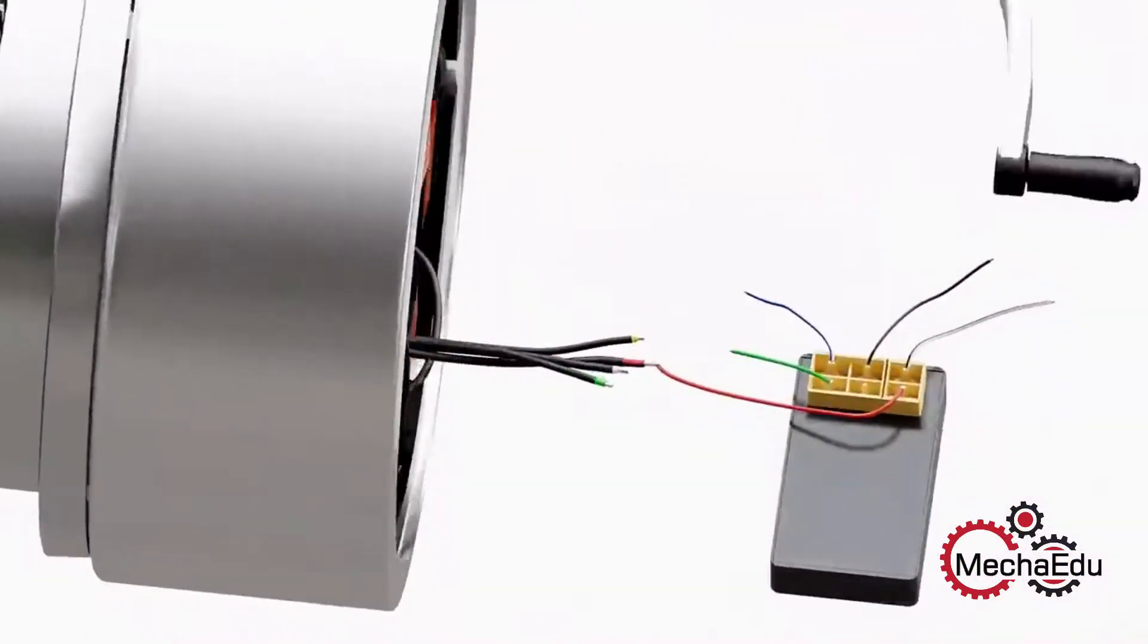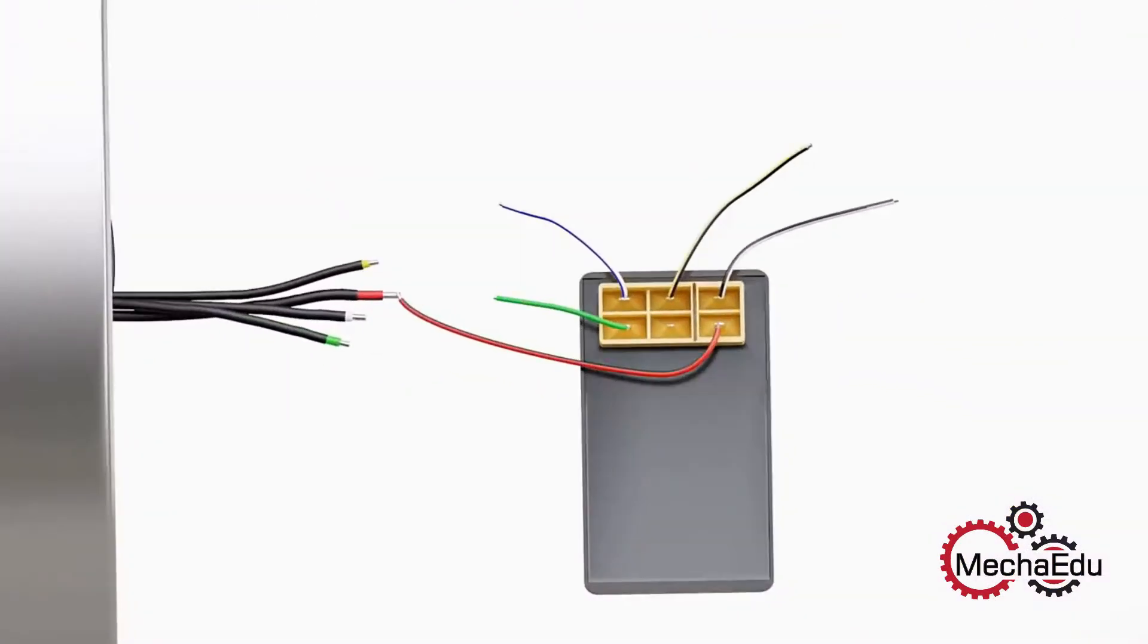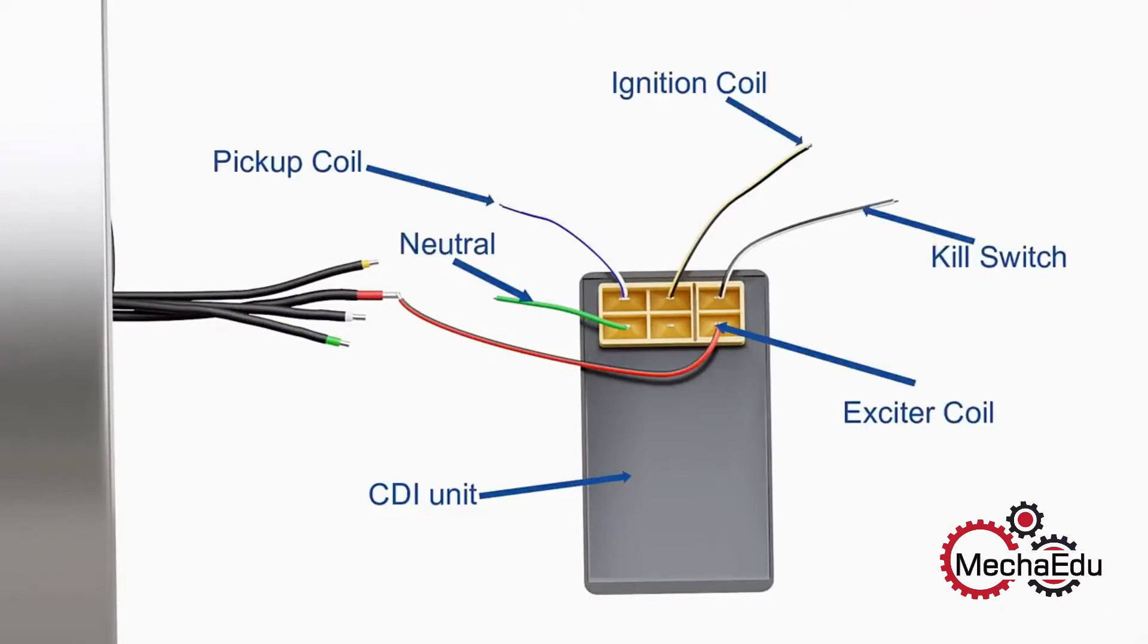This voltage is supplied to an electrical component known as the capacitive discharge ignition, or CDI unit. The connection for an AC-CDI is shown here. The primary function of the CDI unit is to store electric charge and dump the stored charge when required. A capacitor inside the CDI unit stores the electric charge.